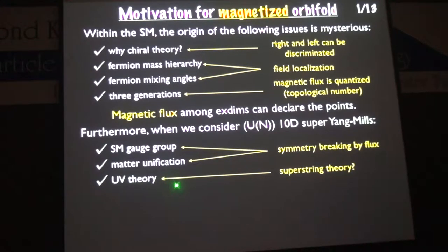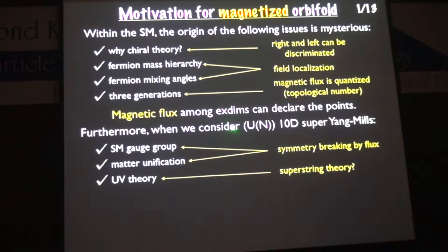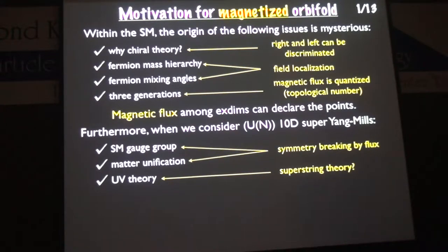We can also consider a U(N) grand unified theory under this framework and attack these issues further. After introducing magnetic flux, gauge groups should be broken. Starting from a gauge theory with higher gauge group, we can consider the origin of the standard gauge group SU(3) × SU(2) × U(1). We can also consider matter unification — the origin of quarks and leptons in a more fundamental theory. Possibly, the UV completion of this theory is superstring theory, though we cannot fully address that here. We mainly focus on the phenomenological aspects of this direction.